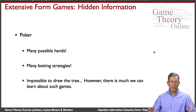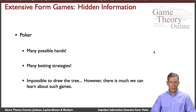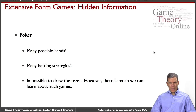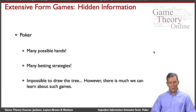How do we represent extensive form games with incomplete information? How might we reason about these things? Moreover, there will be simpler settings. Poker is actually a fairly complicated game, and there are other fairly complicated games with very high stakes.